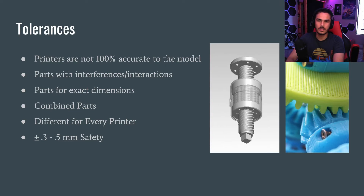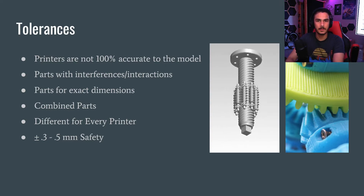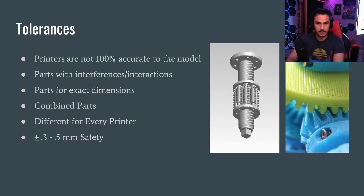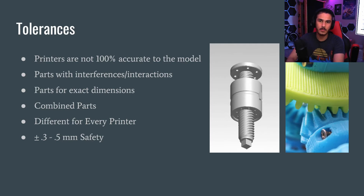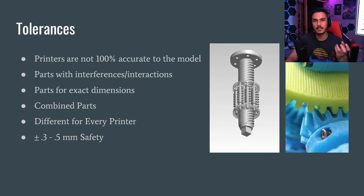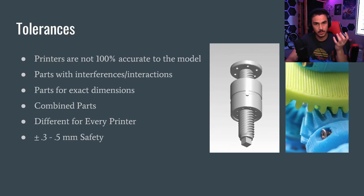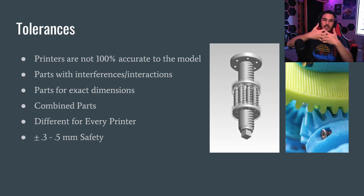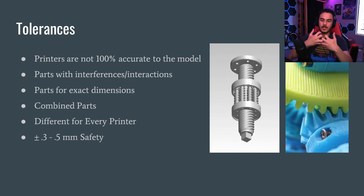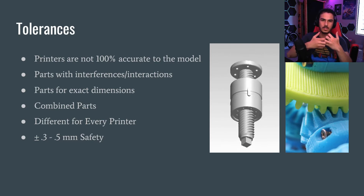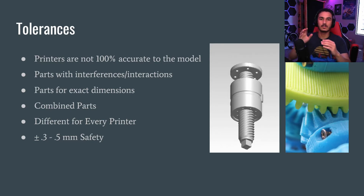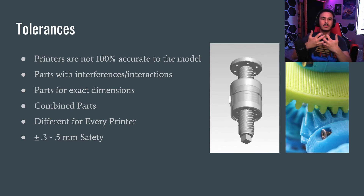So if you take two gears, for example, you want to make sure that they mesh together properly, but you have to take into account what your tolerances will be based on what material you're printing. Different materials behave different ways when they're printing. PLA tends to expand — get a little bit bigger than the source model. If you print two gears at the model dimensions that mesh perfectly, they're just not going to mesh. The teeth will be too big and they won't fit together.